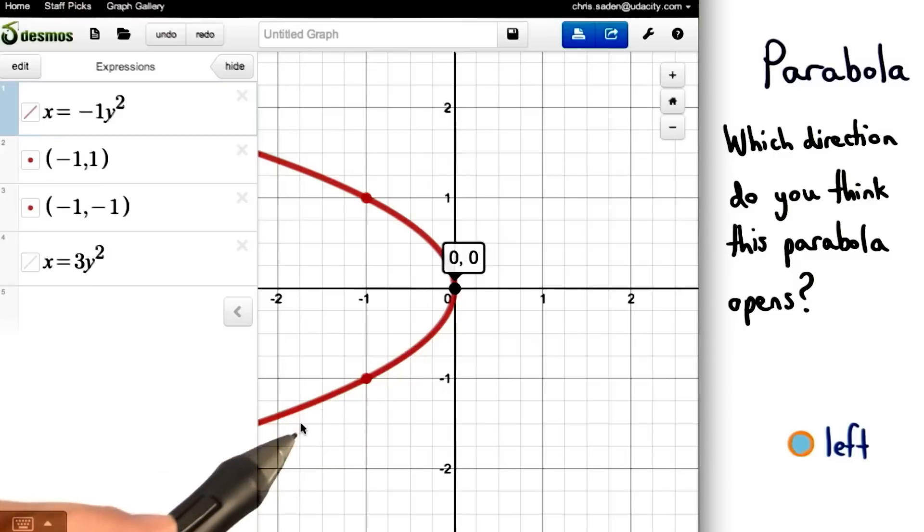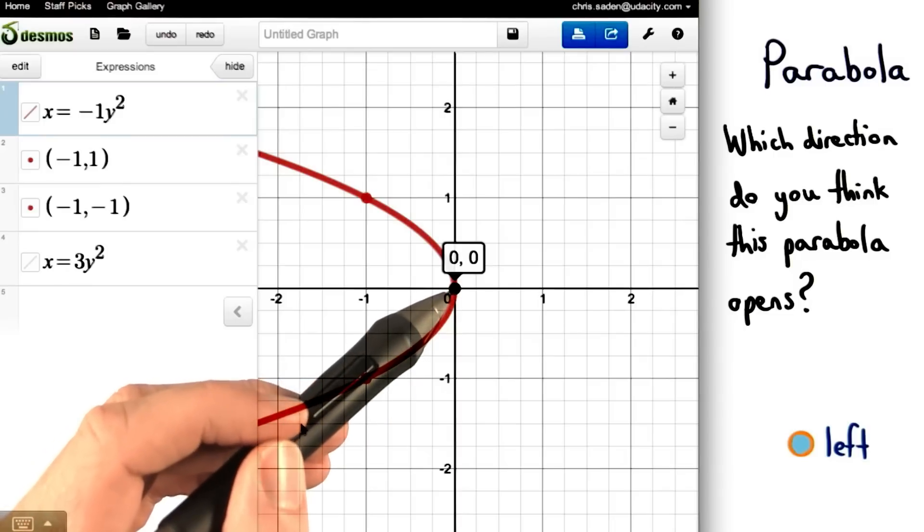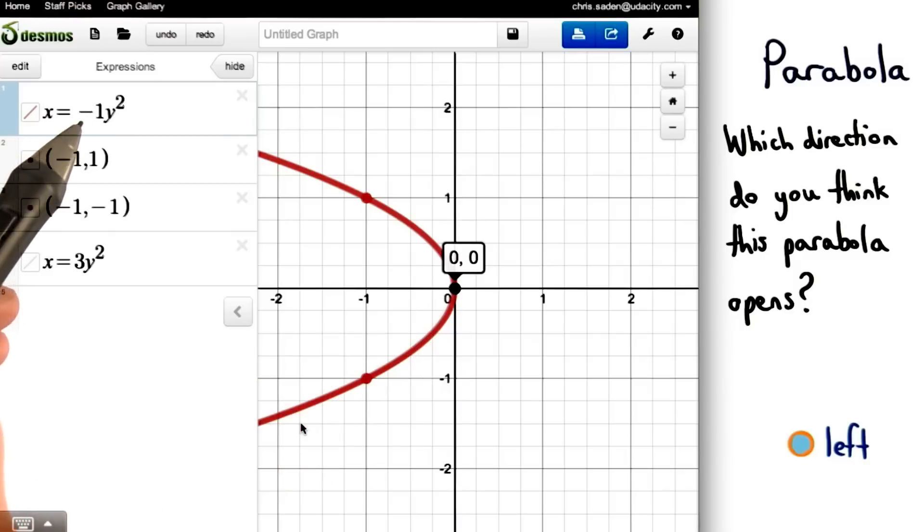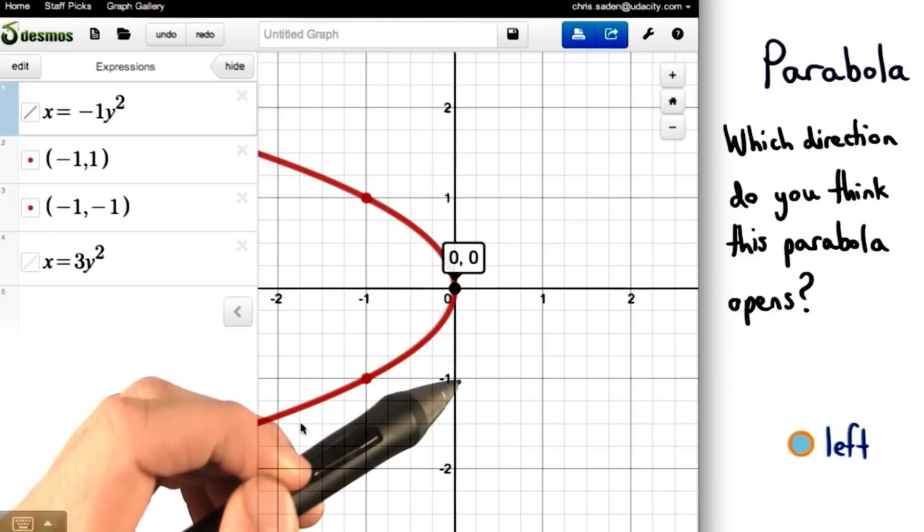If we zoom in on our parabola, we can also find other points by moving from the vertex. Since our parabola is in the form x equals, this time we'll move up and down one unit. Next, we'll move a units in the x direction to find the two points.